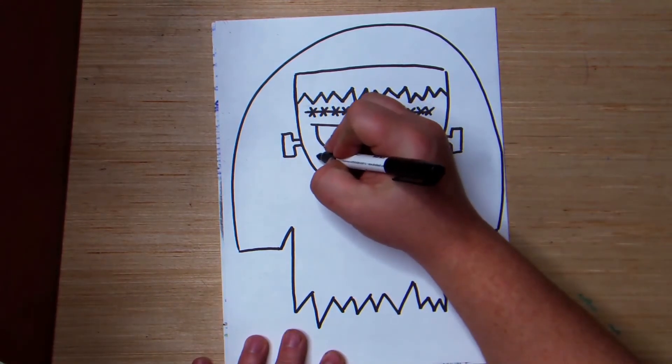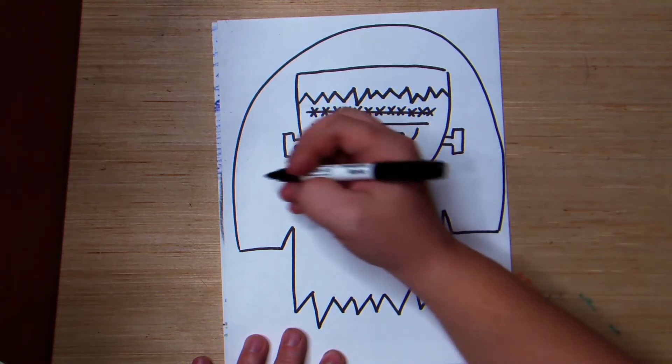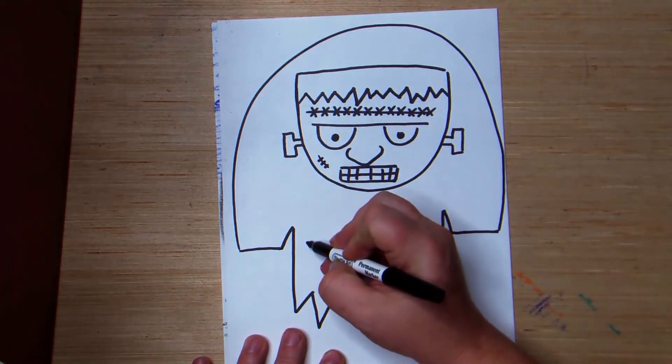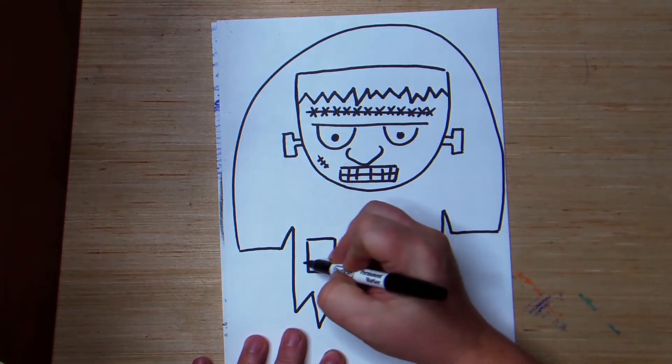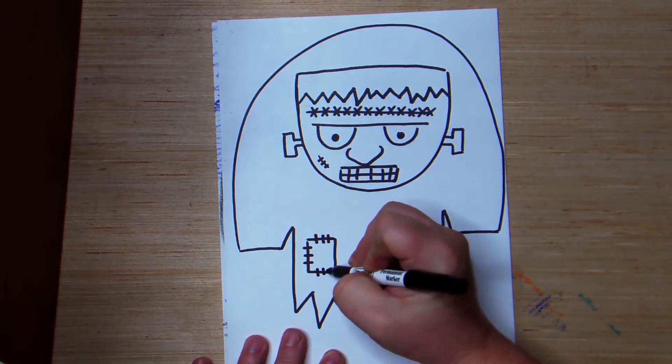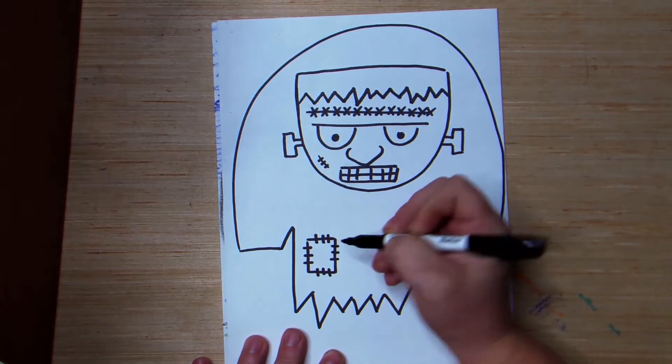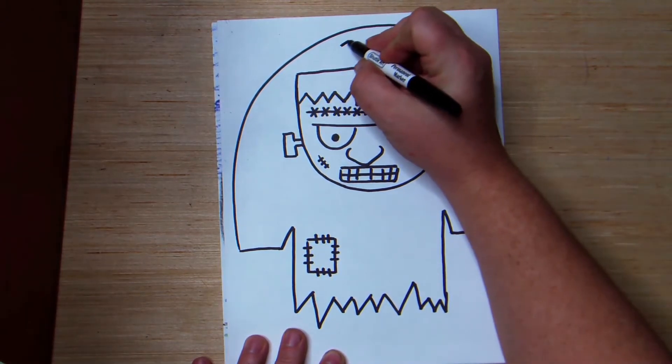Now, if you want to add some more stitches here, you can do that. And one thing I like to do is I might like to make his clothes look a little bit torn up. So, I might come along here and add a little patch. Maybe I'll do another one up here.